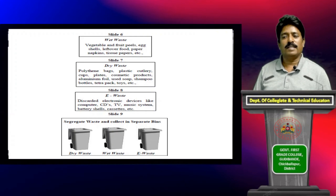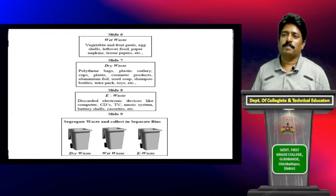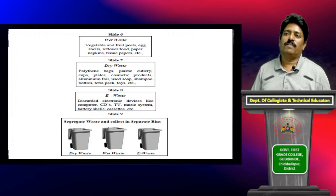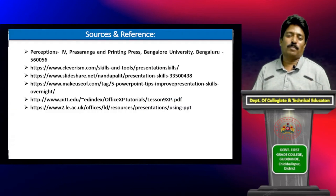In the eighth slide, the title is 'E-Waste,' and the content lists discarded electronic devices like computers, CDs, TV, music systems, batteries, cassettes, etc. Slide number nine has the title 'Segregate Waste and Collect in Separate Bins,' with images of three bins — the first titled 'Dry Waste,' the second 'Wet Waste,' and the third 'E-Waste.' That's all about the PowerPoint presentation example.